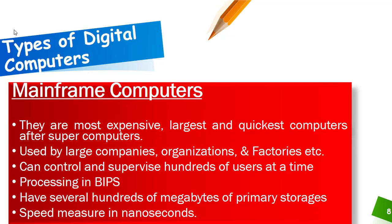The second type of digital computer is mainframe computers. After supercomputers, these are the most expensive, largest, and quickest computers. They are used by large companies, organizations, and factories, and can control and supervise hundreds of users at the same time. Their processing speed is in BIPs — billions of instructions per second.